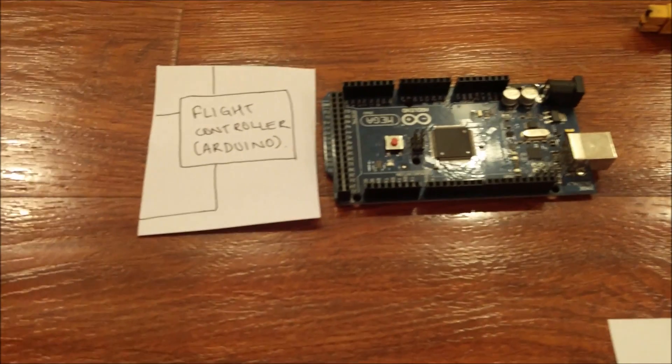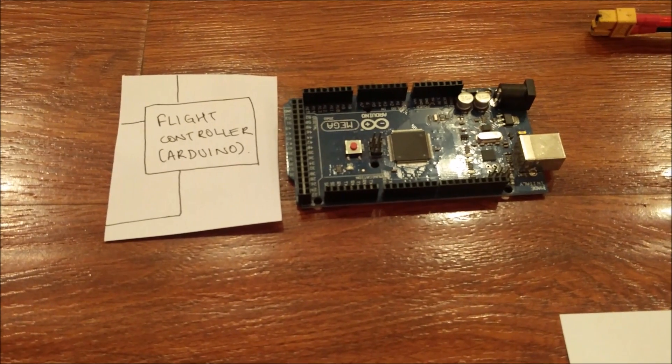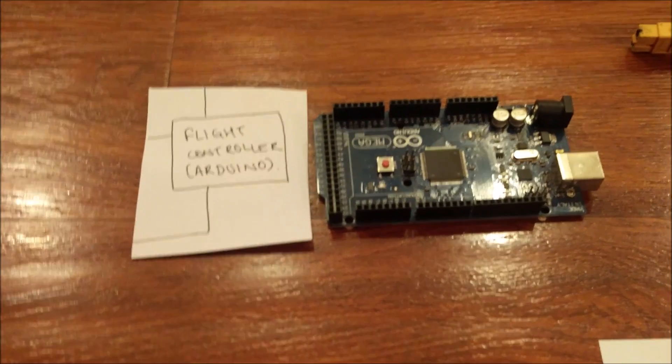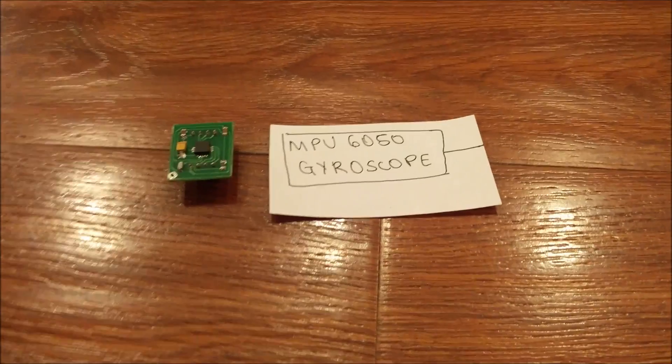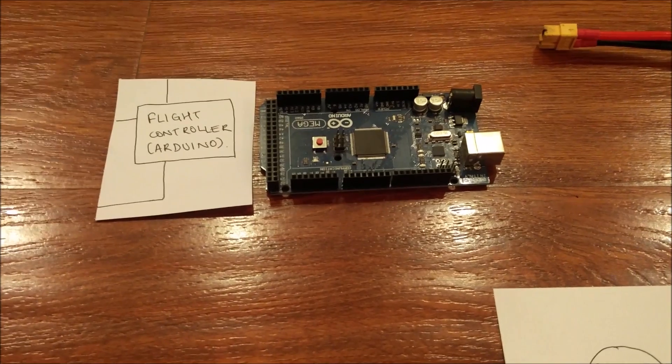This flight controller board keeps check on the balance and the angle of the drone by checking the values that the gyroscope is feeding it, and adjusts the speed of all four motors to keep the drone in the sky.